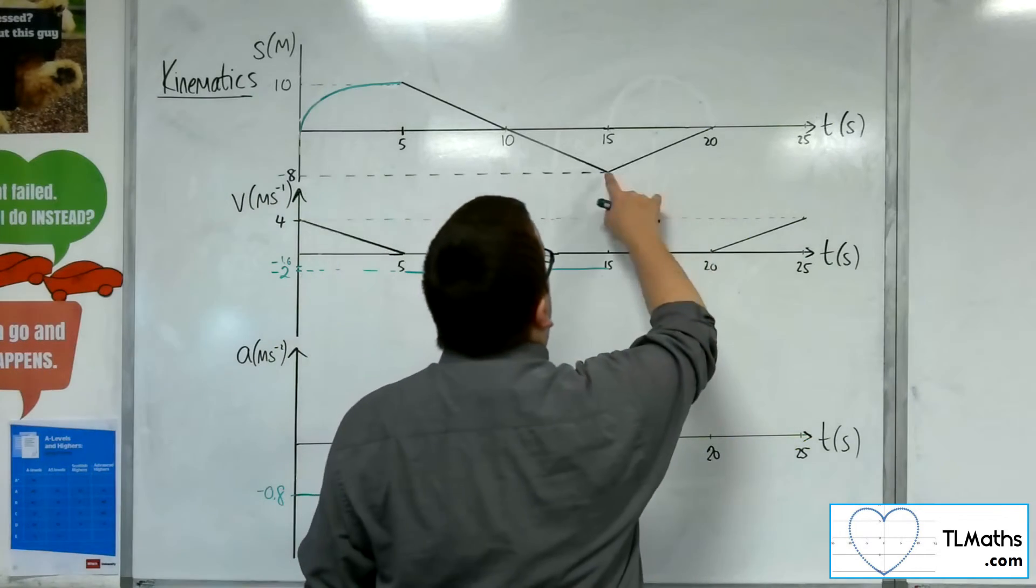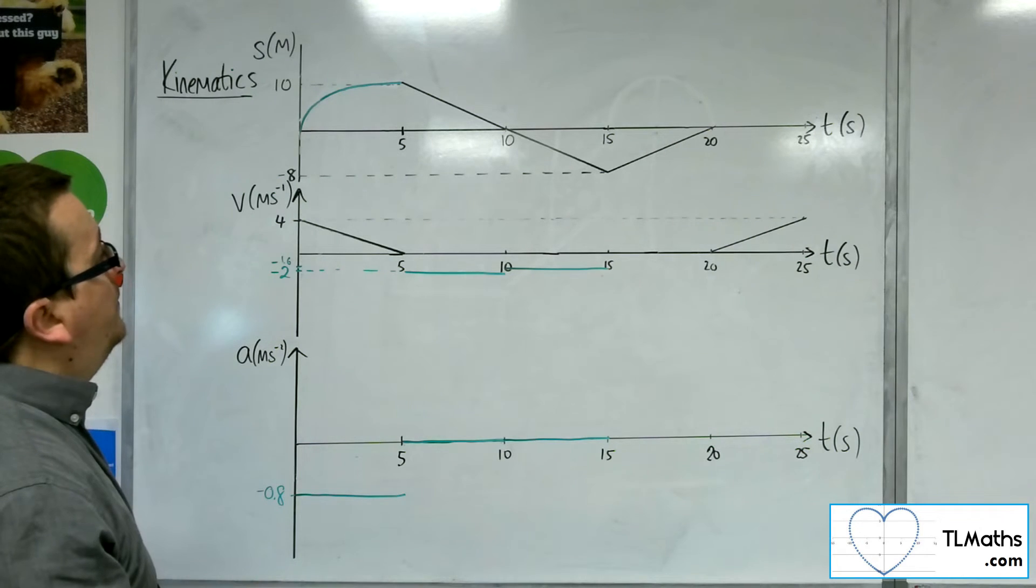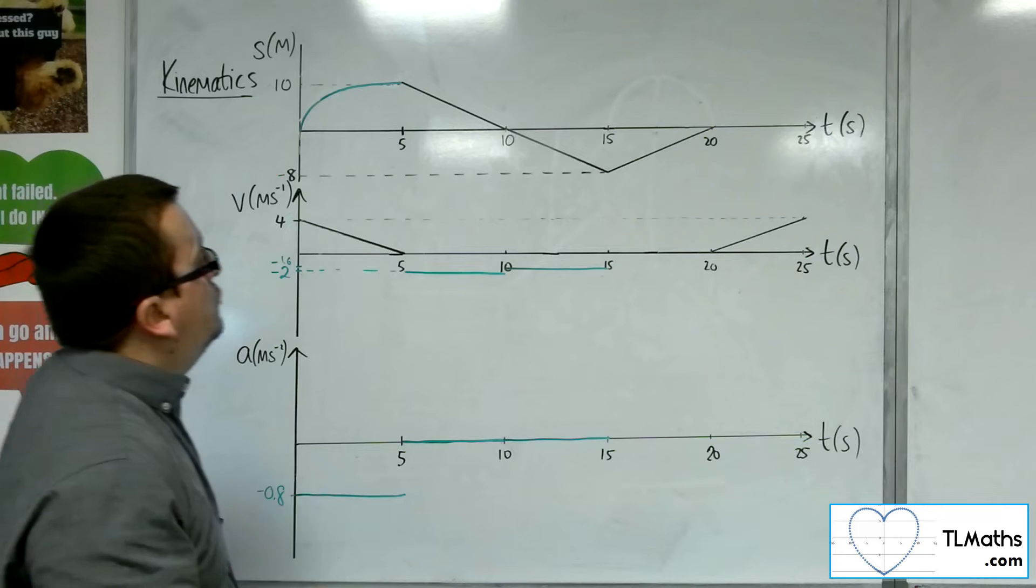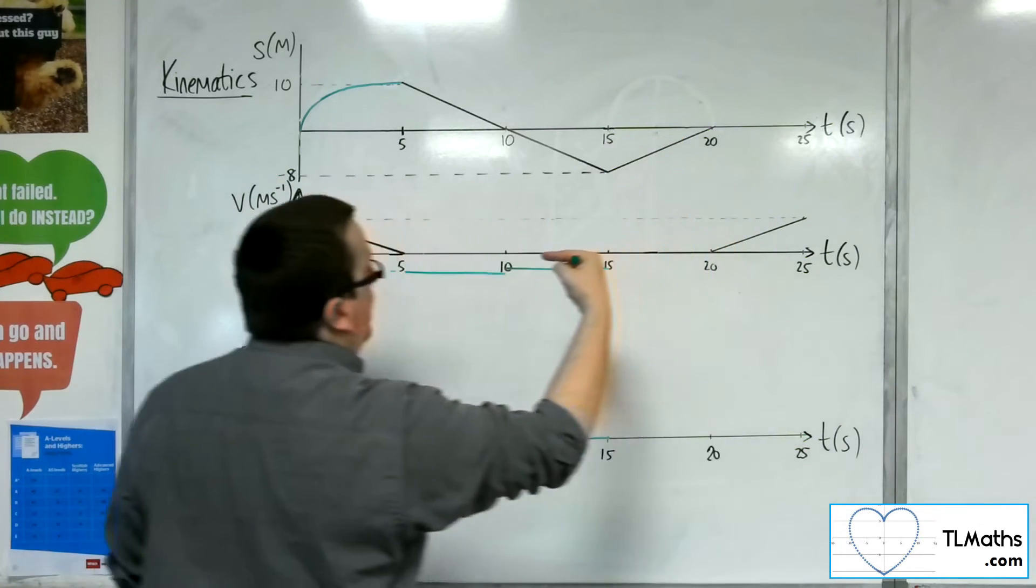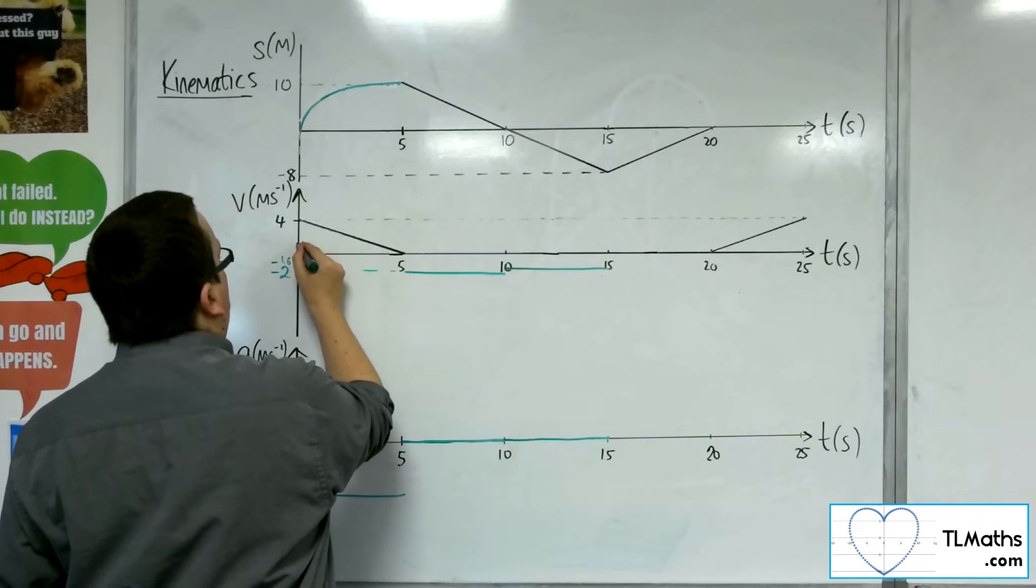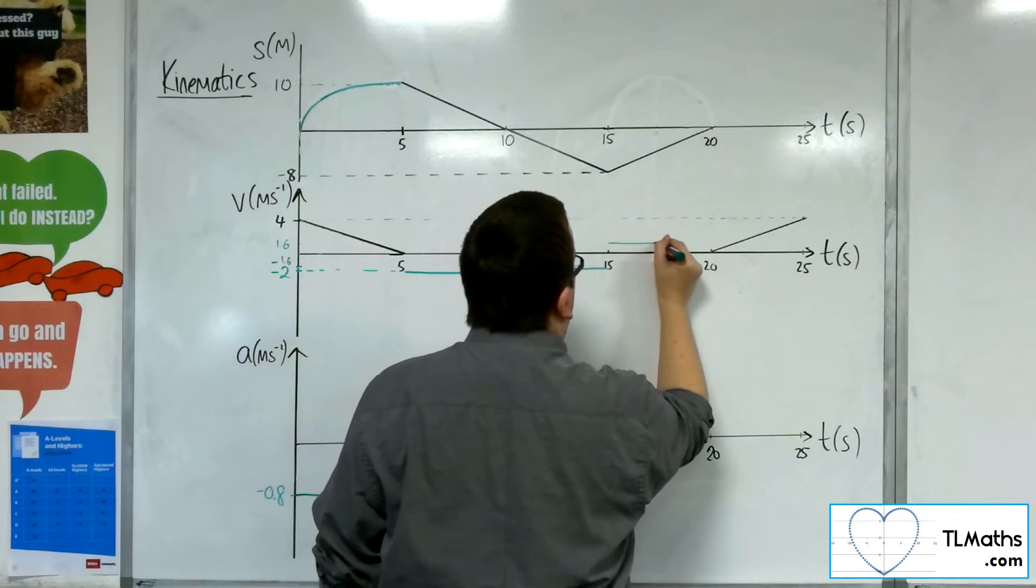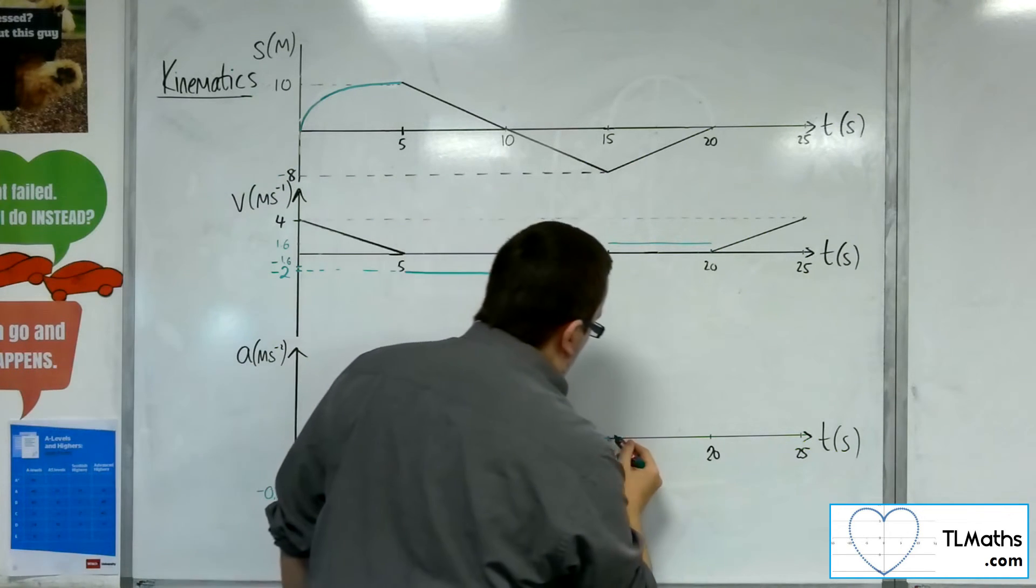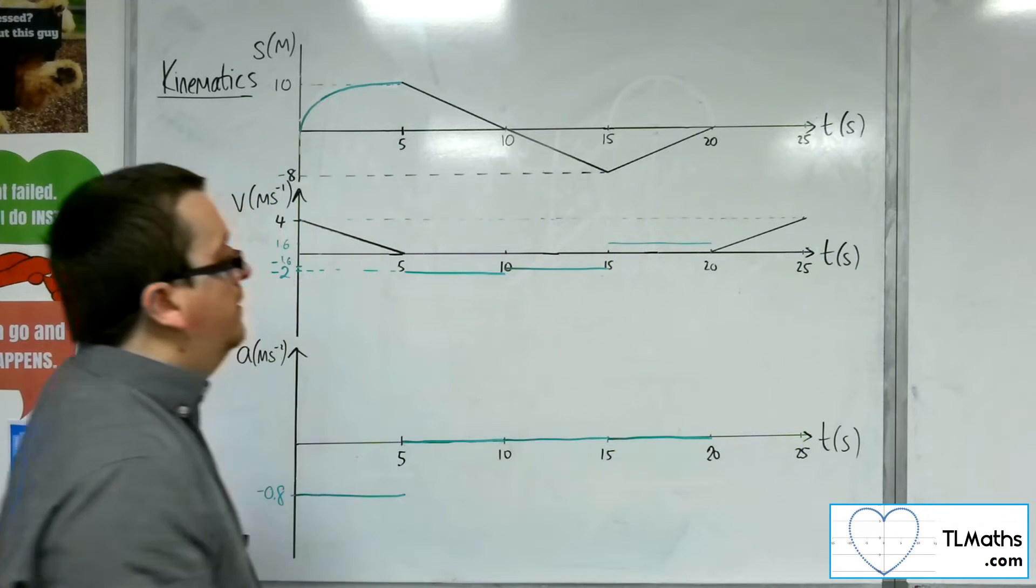Then between 15 and 20, we've got going back up to 0. So I'm returning to my initial position, and the gradient of that line is going to be 8 over 5, so 1.6. So 1.6 would probably be around about there. So we're looking at a horizontal line there. And so the acceleration is the gradient of a straight line, and so 0.